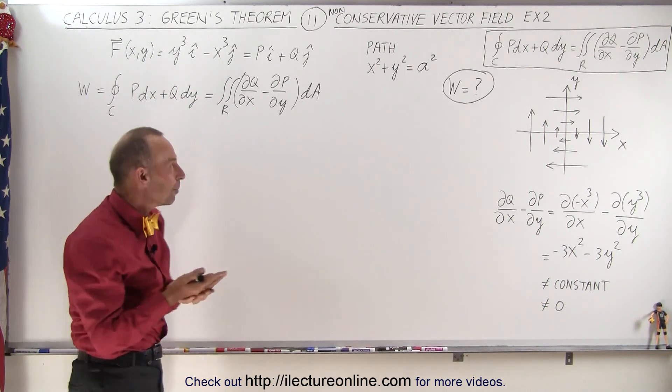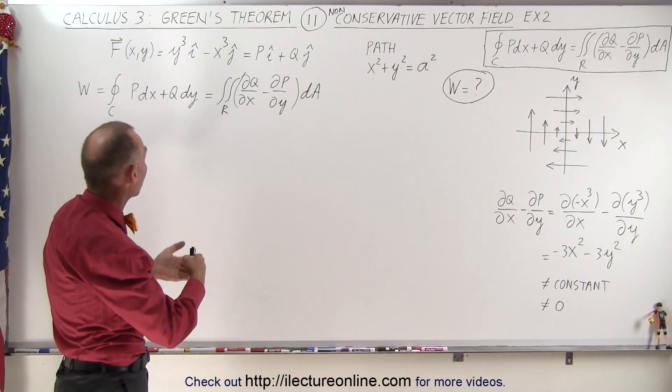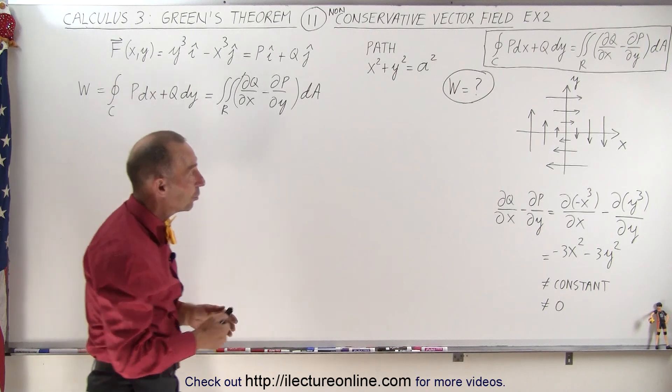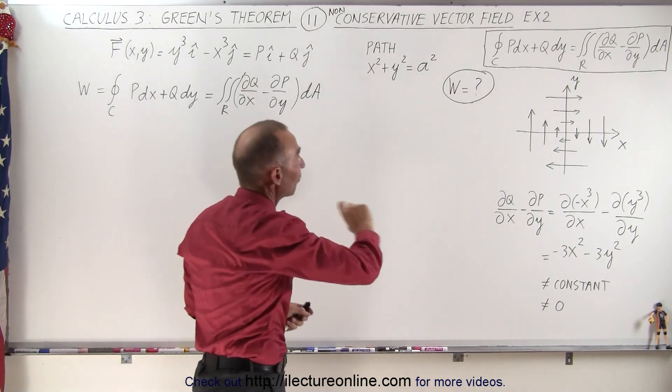So you wonder, why would it now be non-conservative, where before it was conservative, simply by changing the square to a cube? Well, it turns out if we were to graph that vector field, it will indeed look something like this.